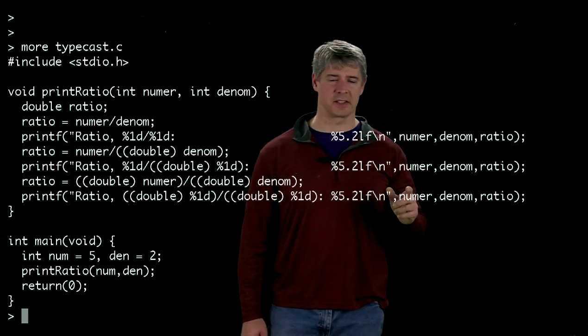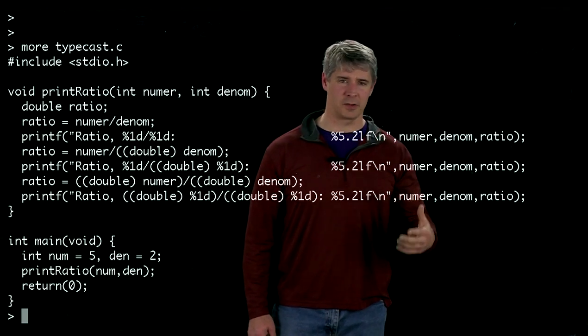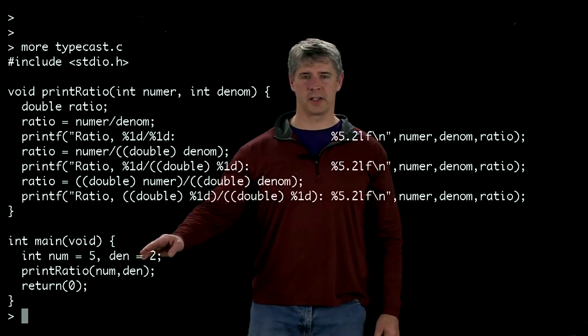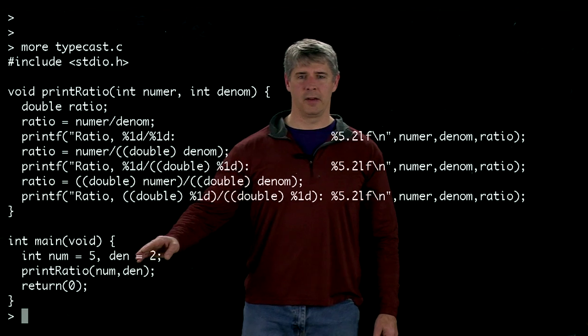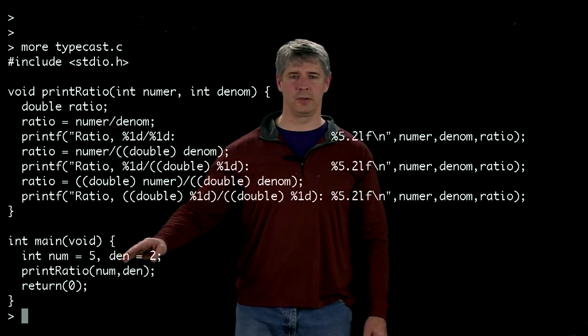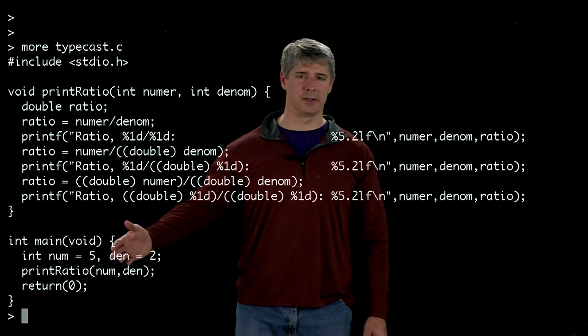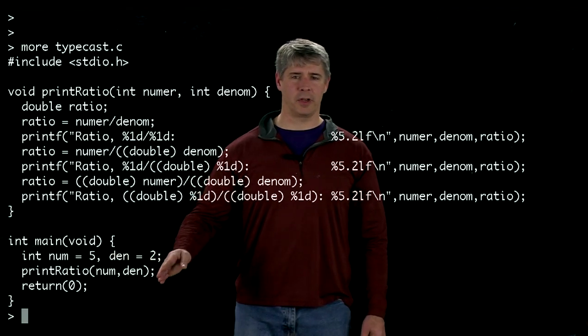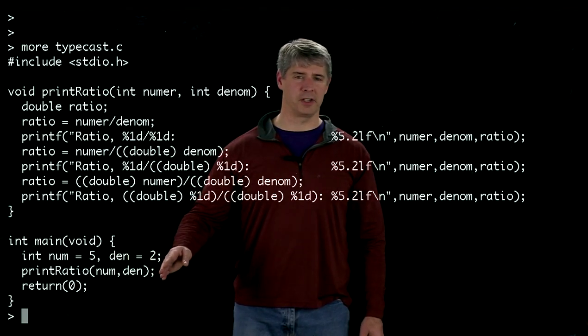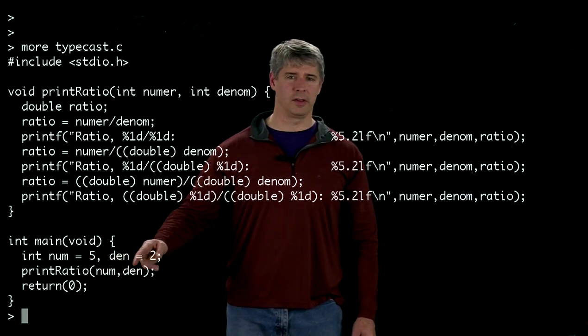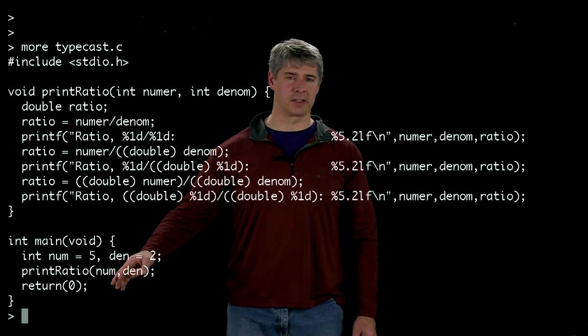Every program has exactly one main function, and that's where execution begins. Execution begins down here by defining two variables, numerator and denominator, and giving them the values 5 and 2. Then we call this function called printRatio and pass to it the two integers, numerator and denominator, and after that the program exits.